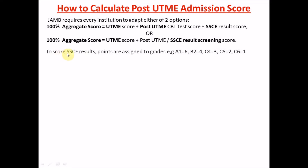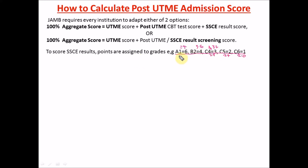Your WAEC results are assigned grades. There are several grading systems. One grading system assigns: A1 = 6, B2 = 4, B3 = 3.6 — actually B3 = 3.2 — C4 = 2.8, C5 = 2.4, and C6 = 2.0. In some grading systems, B2 and B3 take the same grade point. For this video I'm going to be using this particular grading system.